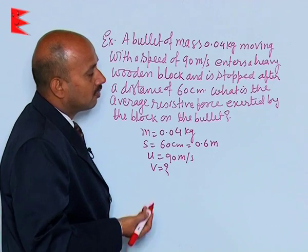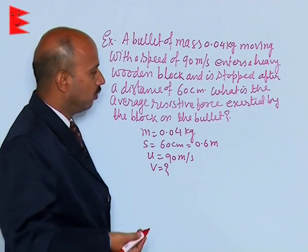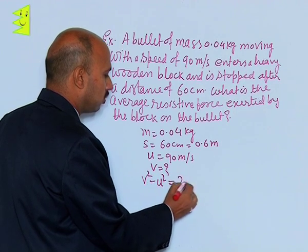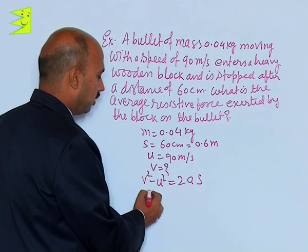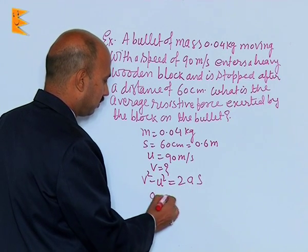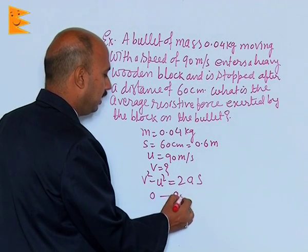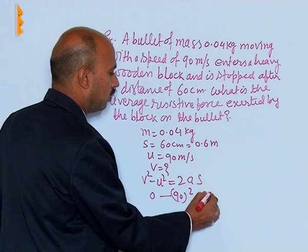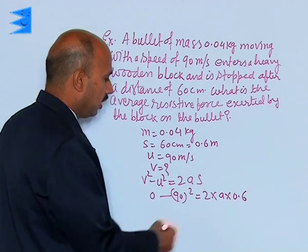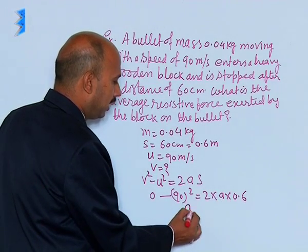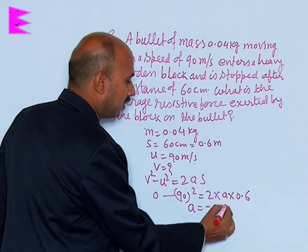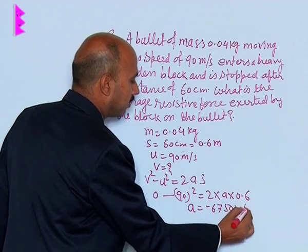You can first calculate the acceleration to get the average force. Using V² minus U² equals 2AS: 0 minus 90² equals 2 into A into 0.6. When you solve this, you get A equal to minus 6750 meters per second squared.